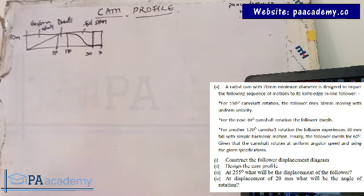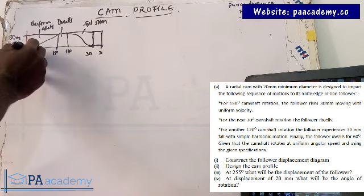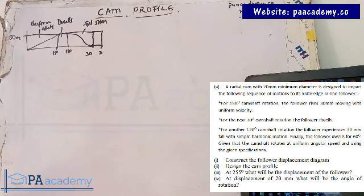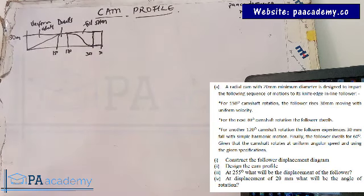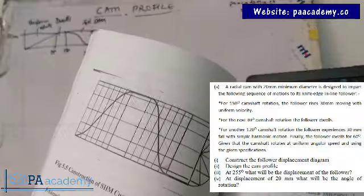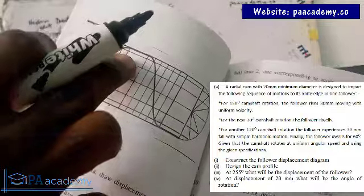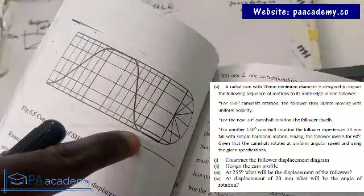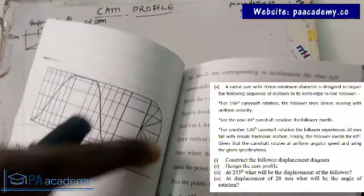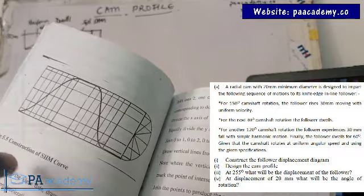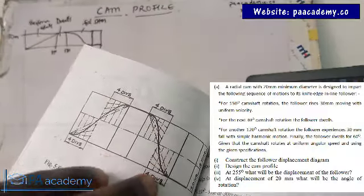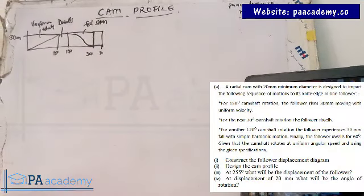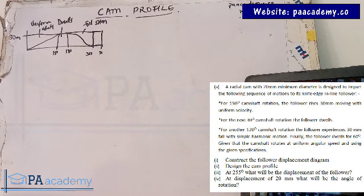Now let's analyse the motion itself. The answer to this is in our manual. For uniform velocity, you just join a straight line from where it rises to where it stops or continues. The dwell means it moves on a straight line. For simple harmonic motion, if you check page 50 of the manual, you will see how it looks — it rises or falls with SHM. You have to introduce a semicircle. You need to know the difference between simple harmonic motion and uniform acceleration and deceleration. The steps are in the manual — you can just follow it.